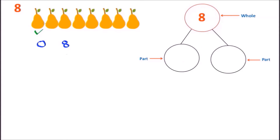Now let's go back to the pairs and count. We have one pair, so I'm going to put down the number 1 — that's going to go on one side. Now how many pairs do I have left? 1, 2, 3, 4, 5, 6, and 7. I have 7 pairs remaining, so the other part will be a 7. So a 1 and a 7: the 1 goes on the left, 7 goes on the right. These two parts give us the number 8 — a 1 and a 7 gives us the whole, which is the number 8.